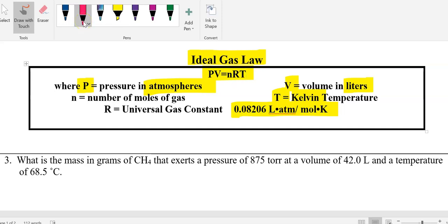Reminder, Kelvin is equal to degrees C plus 273, and for our pressure, 1 atm is equal to 760 torr, which is the same as 101.325 kilopascals. You're going to need to convert where appropriate.